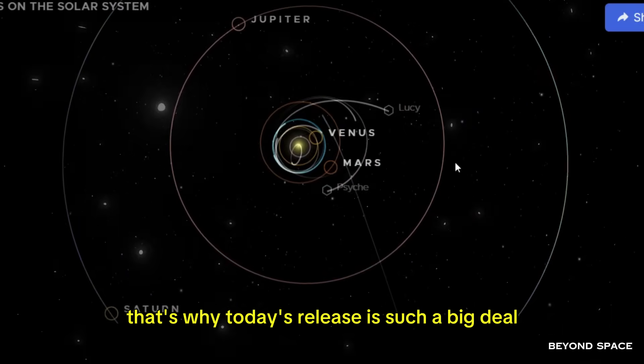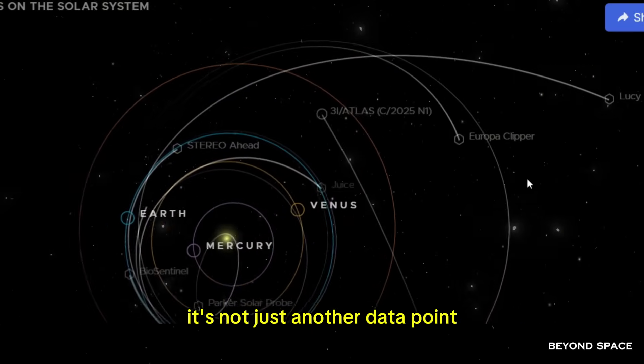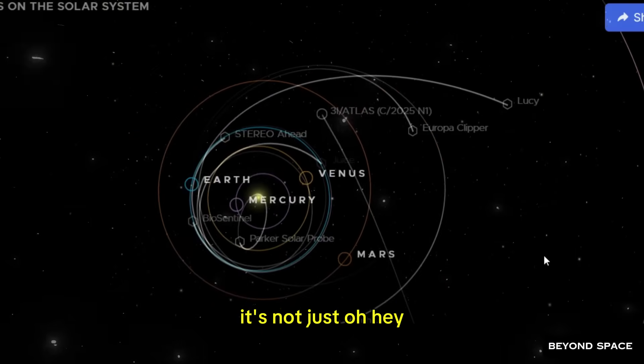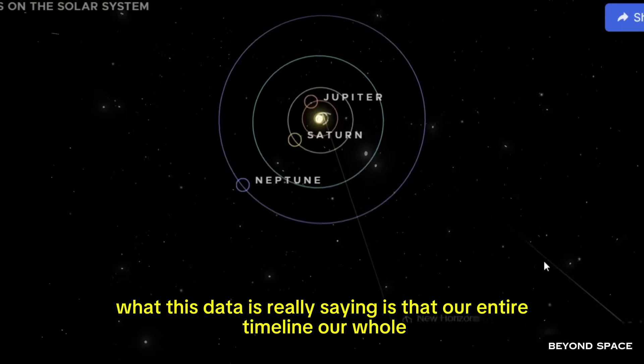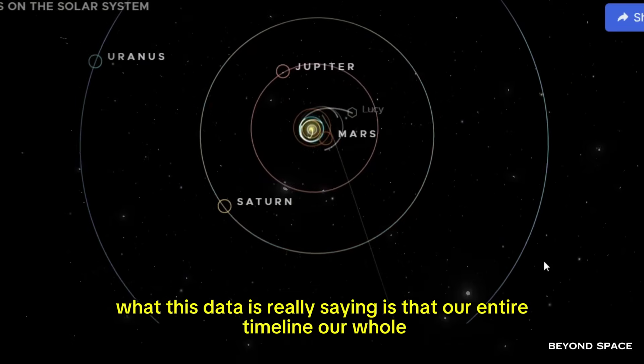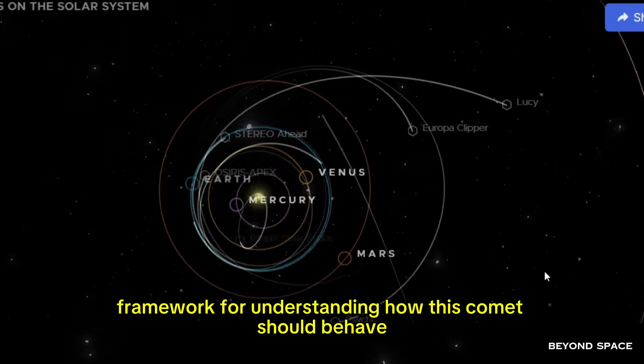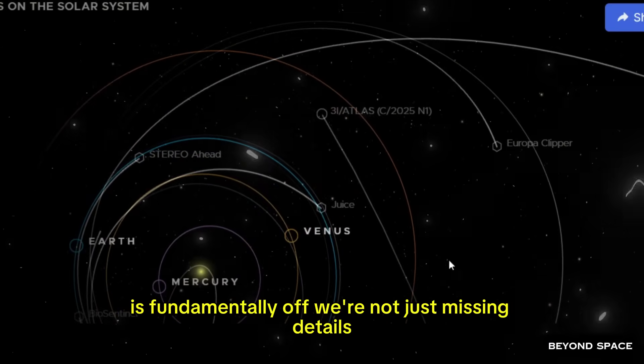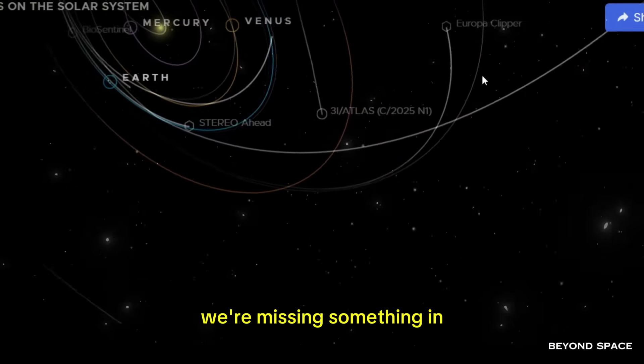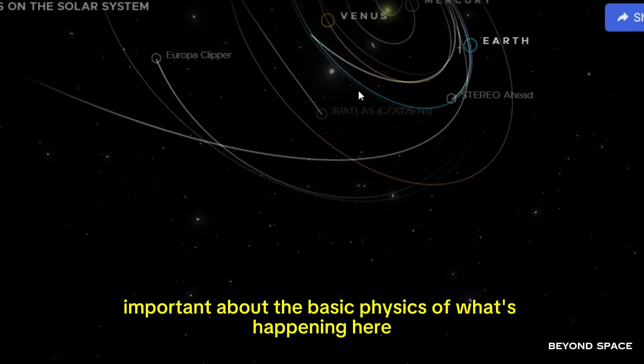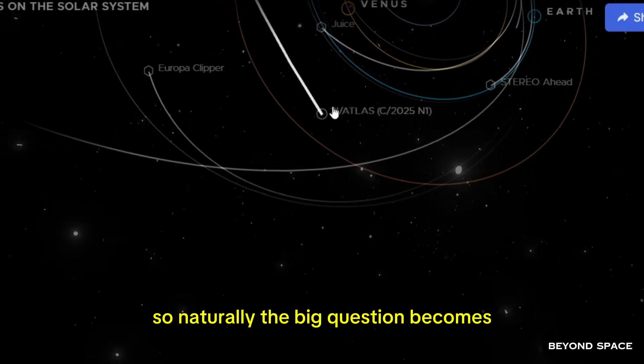That's why today's release is such a big deal. It's not just another data point. What this data is really saying is that our entire timeline, our whole framework for understanding how this comet should behave is fundamentally off. We're not just missing details, we're missing something important about the basic physics of what's happening here. So naturally, the big question becomes what could possibly be keeping 3i Atlas so active? What's driving all of this?